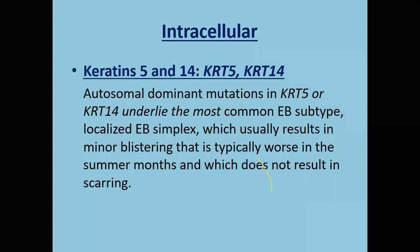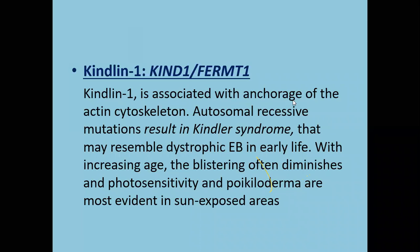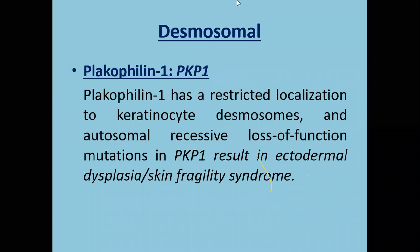Intracellular proteins include keratin 5 and 14, which are the most common EB subtype — localized EB simplex. All EBs are worse in summer and improve in winter. Another intracellular protein is exophyllin 5, which is the type seen in EB simplex with mottled pigmentation. Kindlin-1 is associated with anchorage of the actin cytoskeleton and is the protein seen in Kindler syndrome. Kindler syndrome resembles dystrophic EB in early life but with increasing age becomes more of a picture of photosensitivity and poikiloderma.